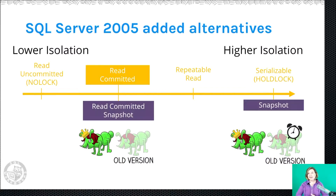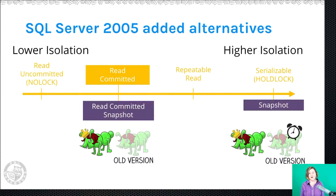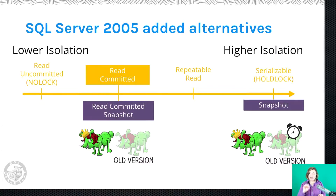So the default isolation level was set as Read Committed, but a long time ago we got more alternatives. In SQL Server 2005 we got some very cool new alternatives: version-based isolation levels. We got two of them — Read Committed Snapshot and Snapshot. These version-based isolation levels have different costs; there are still locks involved and writers will still block writers, but the isolation for readers is handled differently.